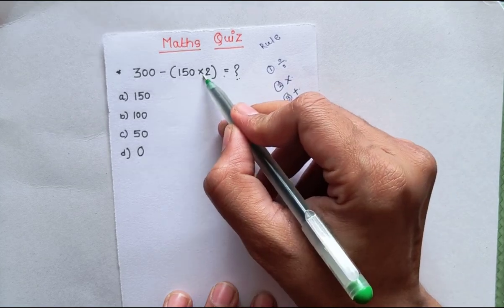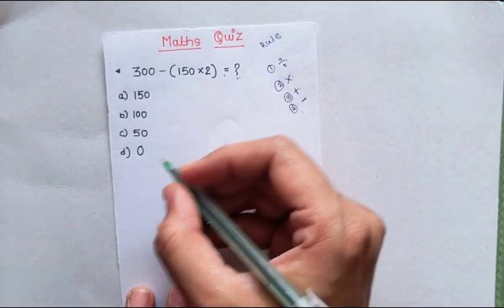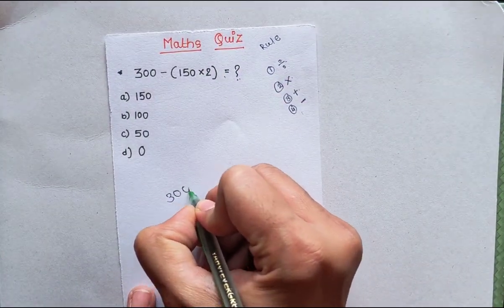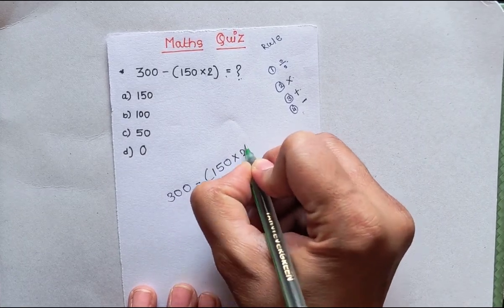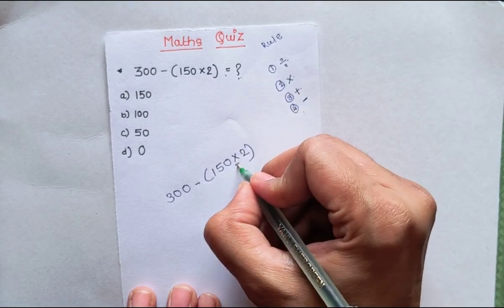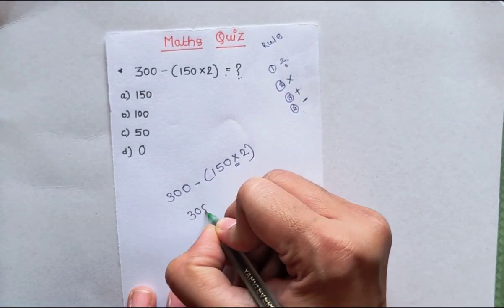Our question is 300 minus 150 into 2. So first we will do multiplication. 300 minus, in bracket, 150 into 2 equals 300.